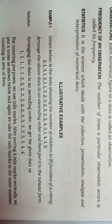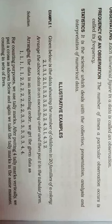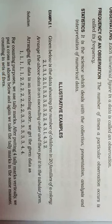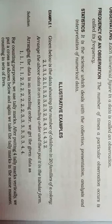The given data shows the number of children in 20 families of a colony. We first have to arrange this data in ascending order, then put it in tabular form. In ascending order, the smallest comes first: so 1 comes first, then 2, then 3, and lastly 4. This is our ascending order arrangement.